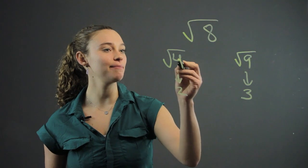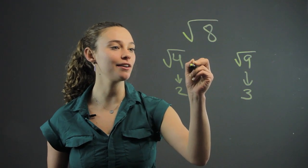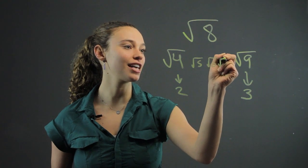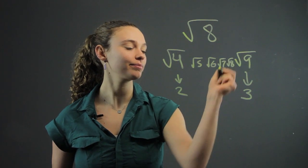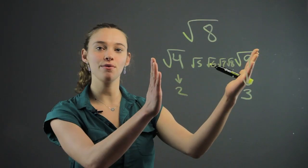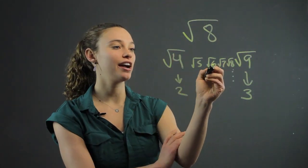Well, if you think of the numbers in between root 4 and root 9, we have root 5, root 6, root 7, and root 8. So 8 falls closest to root 9. And if you want to approximate where it is...